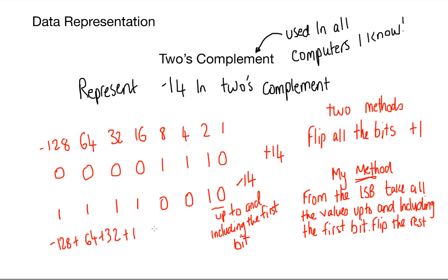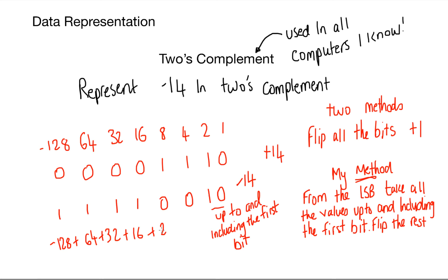That means the most significant bit becomes -128, plus 64, plus 32, plus 16, and plus 2, because that's where I carry my 1's. If you work that out with a calculator, it should come up to the value of -14.